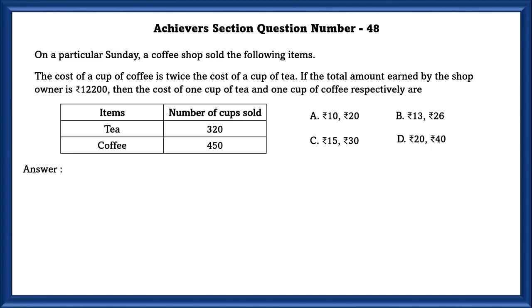Achievers section question number 48. On a particular Sunday, a coffee shop sold the following items. The cost of a cup of coffee is twice the cost of a cup of tea. If the total amount earned by the shop owner is 12,200 rupees, then the cost of 1 cup of tea and 1 cup of coffee respectively are.